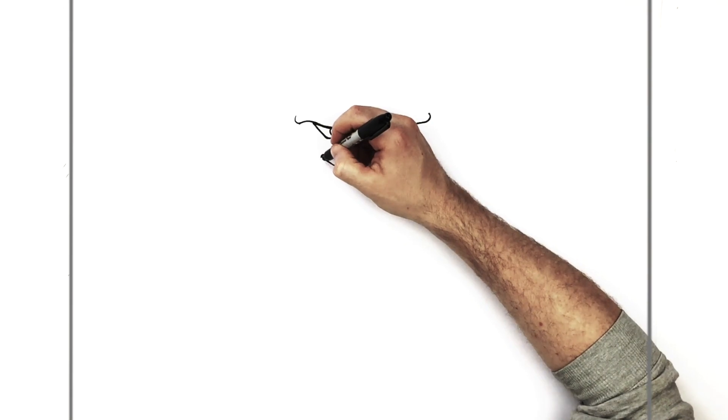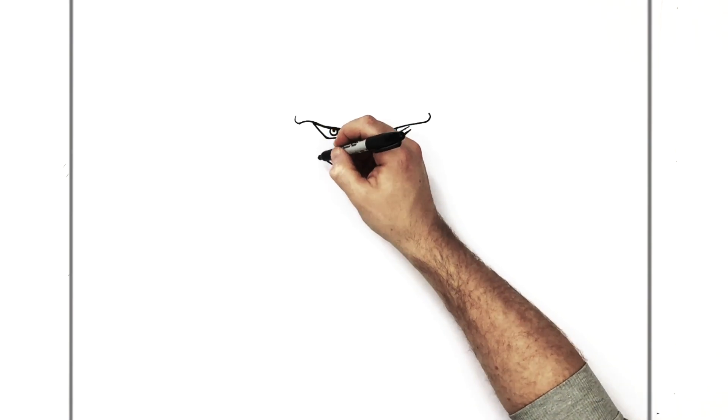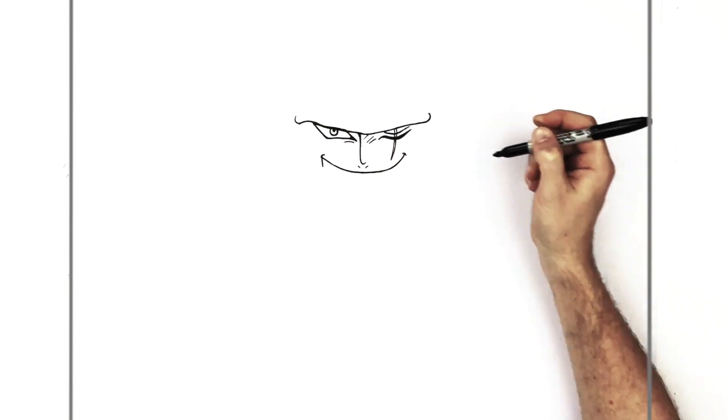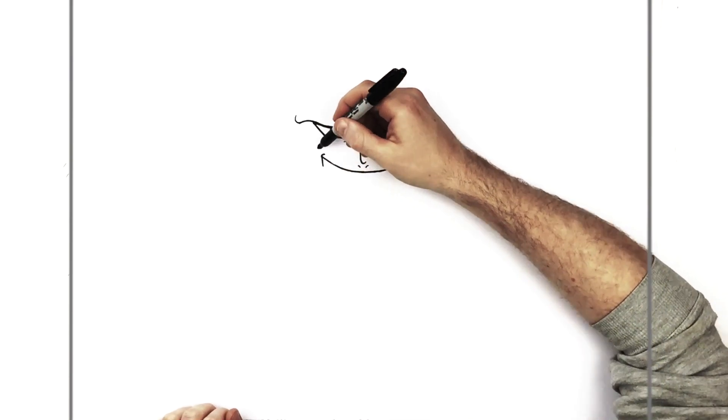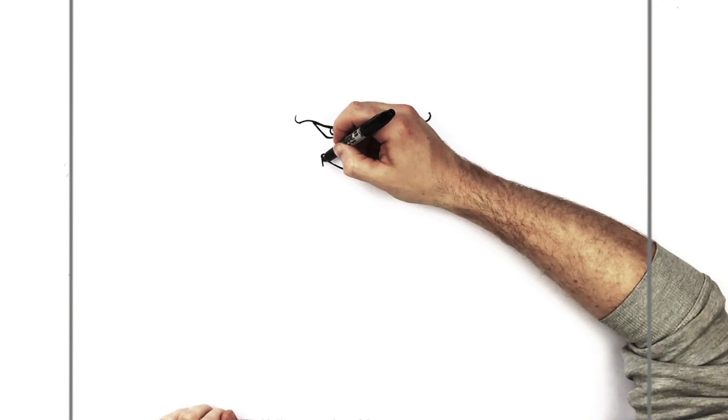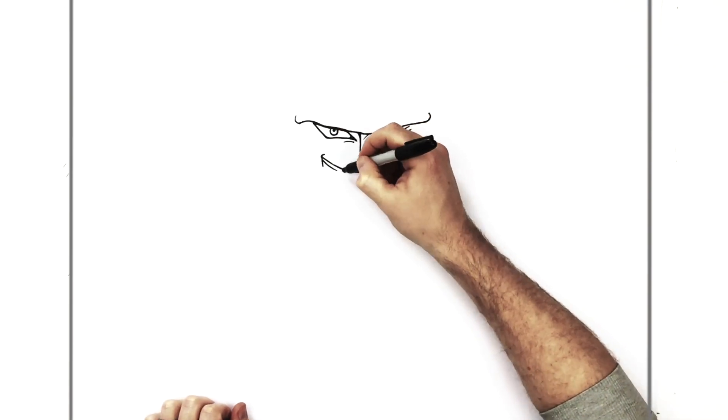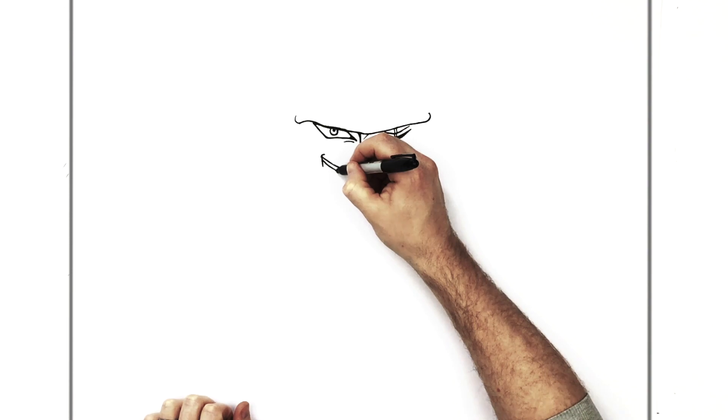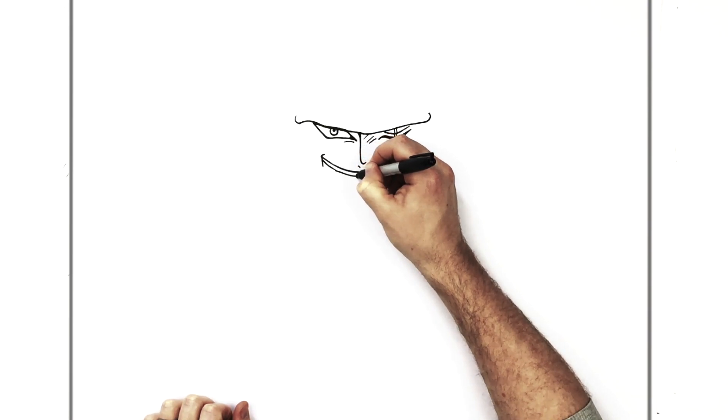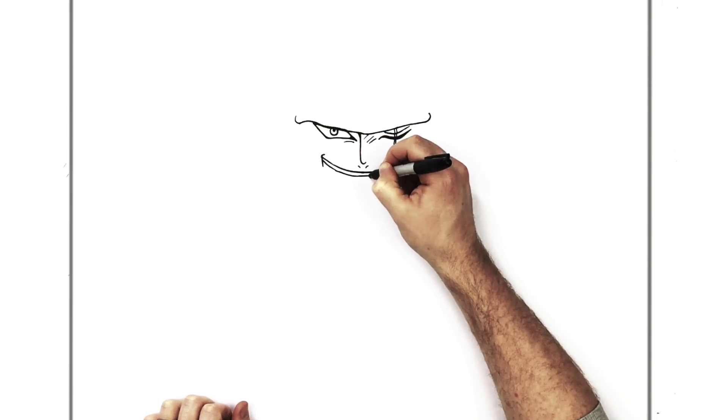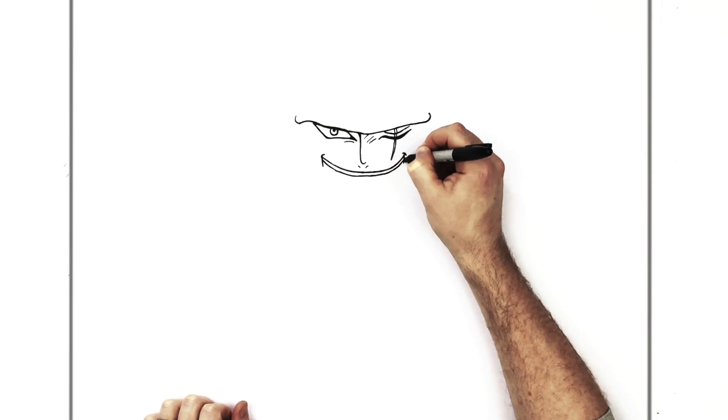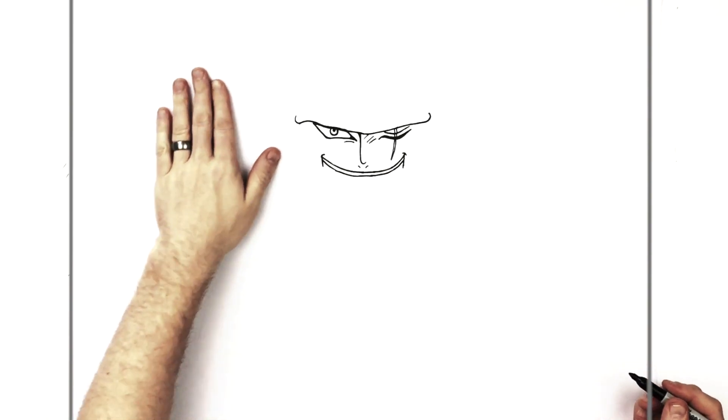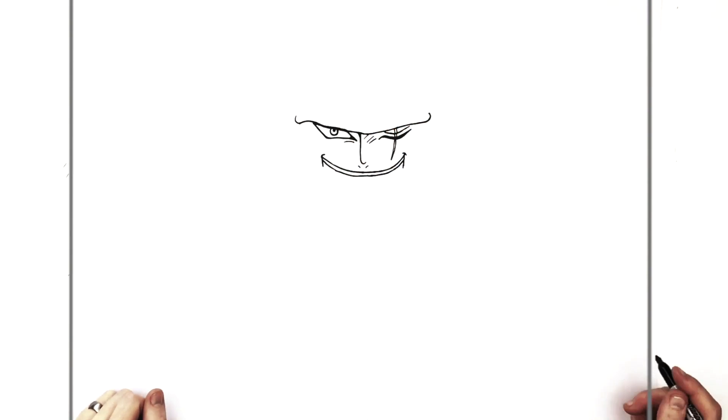And then the line for his teeth under there. So we do that again. So we got the edge. And the teeth are sitting on the sword. So we're just going to go right down. Do that same line again. And just the edge of his mouth there.